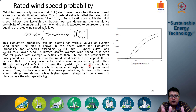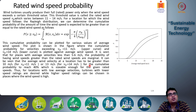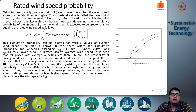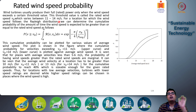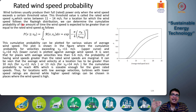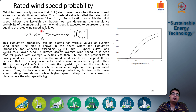So how can we determine what rating is best for a given location? First, we evaluate the wind speed distribution at that location. Wind turbines are usually rated between 11 to 14 meters per second — meaning they perform at maximum efficiency when the wind speed is 11, 12, 13, or 14 m/s. Each turbine has a certain velocity rating, and most values fall in this range. For a location where wind speed follows the Rayleigh distribution, we can determine the cumulative probability — the fraction of time the wind speed is expected to be greater than or equal to the rated wind speed.